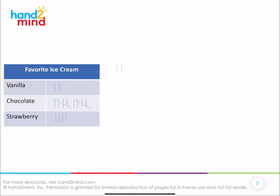So let's look over here at some more. We have another chart that's about favorite ice cream. Our categories are going to be vanilla, chocolate, and strawberry. We're going to make each ice cream cone represent one person's vote for their favorite ice cream — that's what it's going to represent.